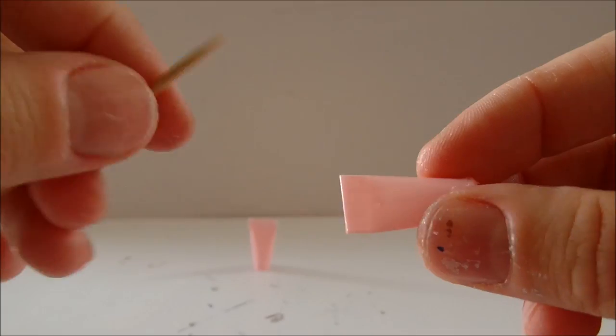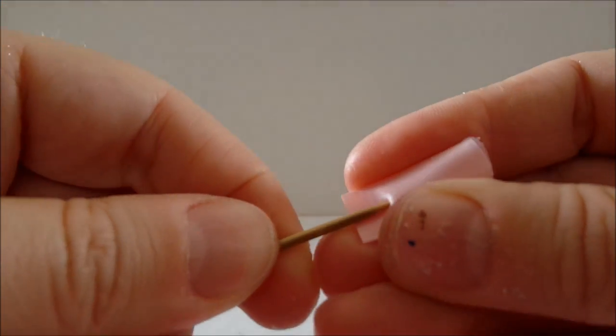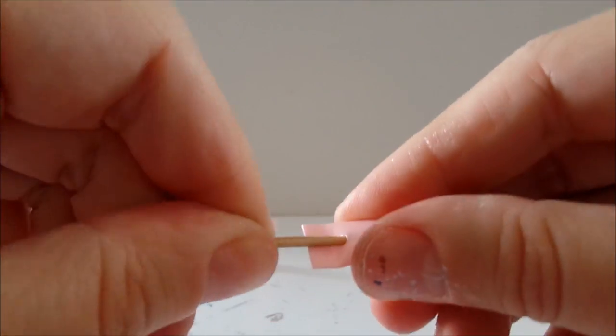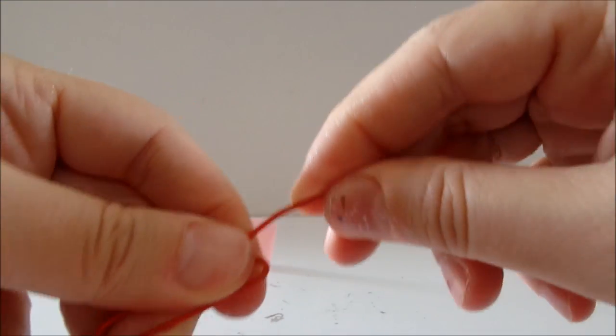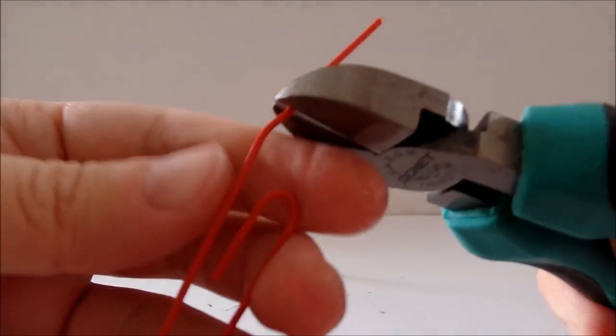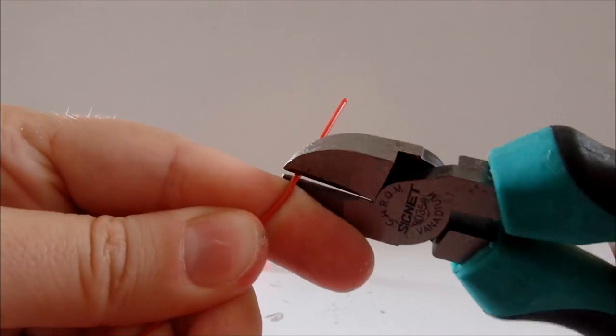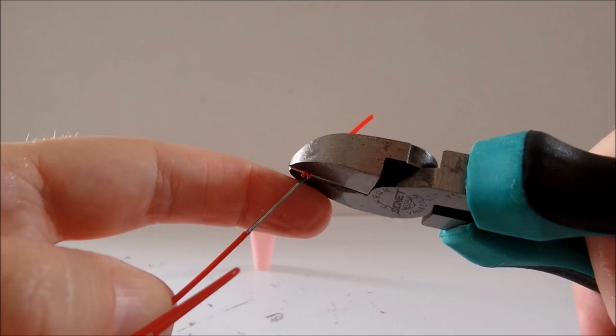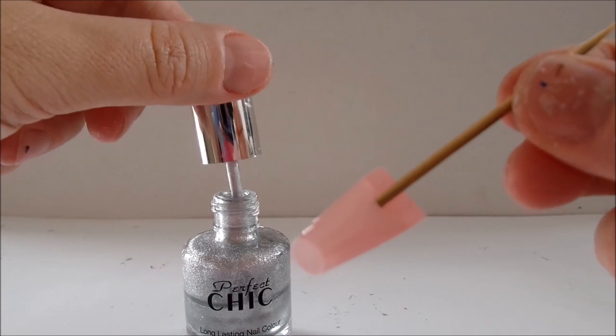Then take a toothpick and enlarge it. For the straw I will use this paper clip and I will use this cutting pliers to remove the straw from the paper clip. Now paint it with the nail polish of your choice.